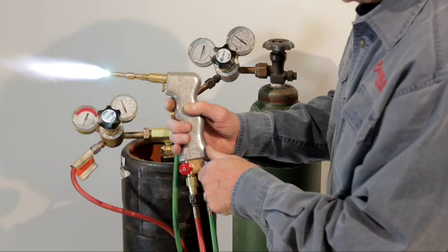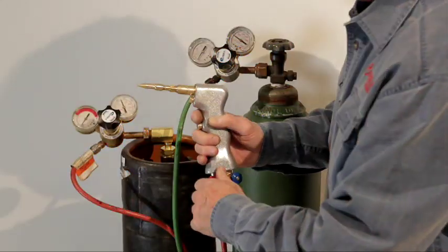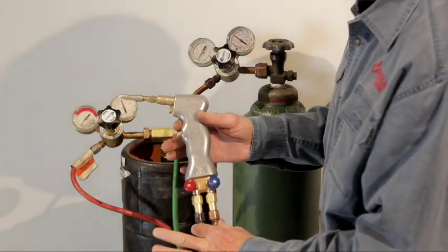Come here and turn the oxygen in. Right there, you can see just as that feather disappears right there, you're set. Go and cut the oxygen off first, and then the acetylene. Now we're ready to weld.